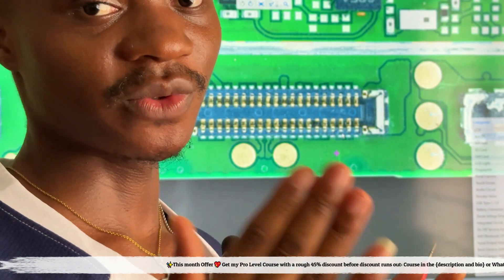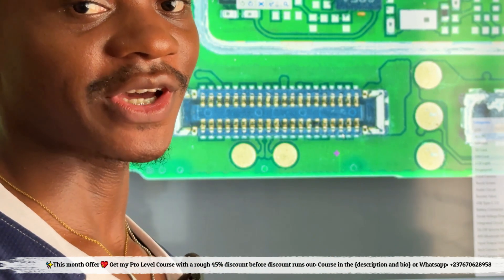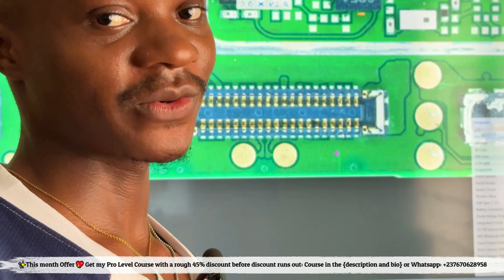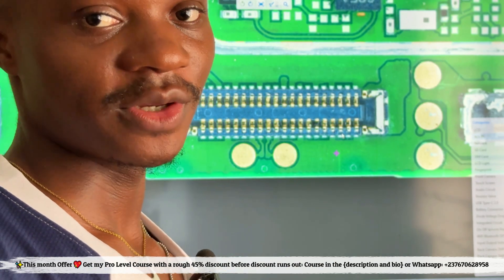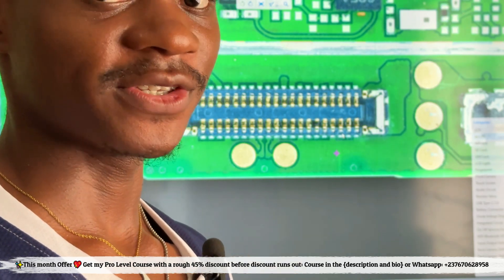So if you want my courses, you want to learn how to troubleshoot and do micro soldering, you can send me a message on WhatsApp and get my courses with a huge discount right now before the discount expires. Or check the link in the video description, get my courses from the link or from the link on my bio. Thank you and follow for more amazing videos.